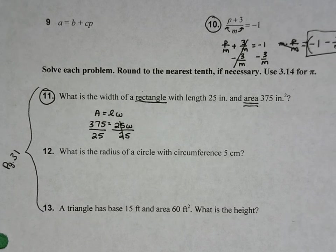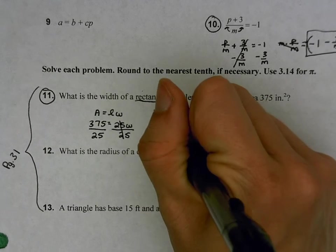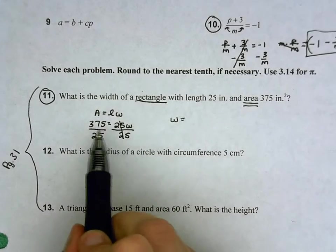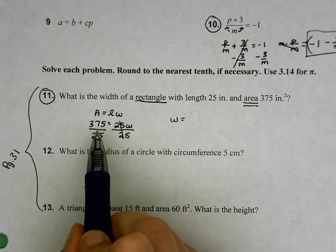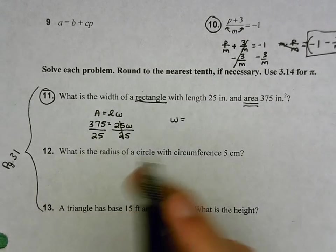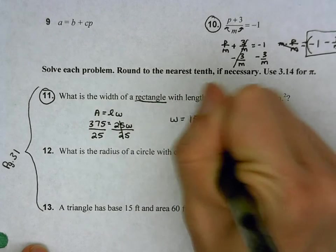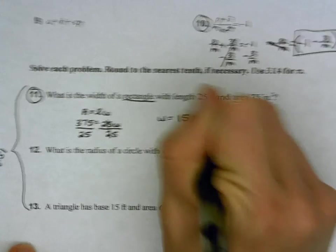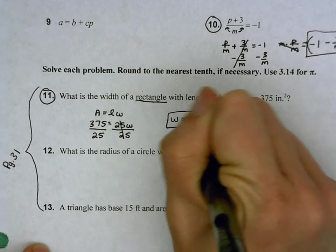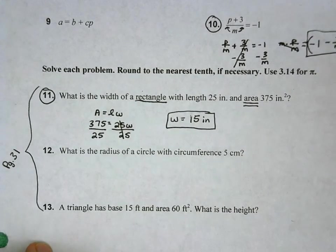At which point, we can use our calculators if we need to. But we have w equals, and 375 divided by 25 is 15. And our units, in this case, are inches. And there you go.